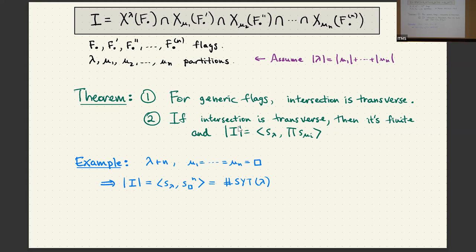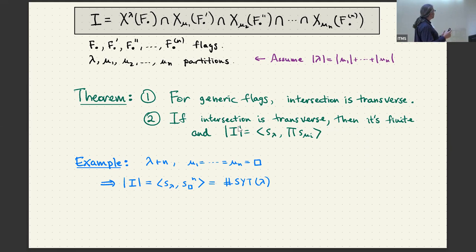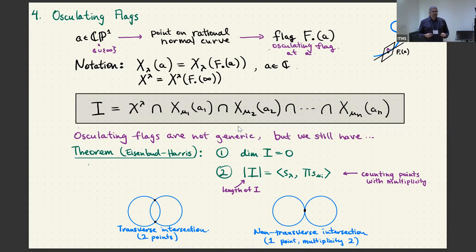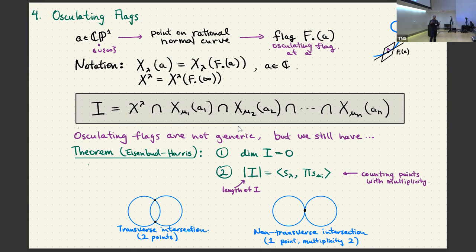The first statement is due to Kleiman. A basic example: if lambda is a partition of n and the mu_1 through mu_n's are all just a single-box partition, then the number of points in the intersection is the inner product of S_lambda with S_1^n, which just counts the number of standard Young tableaux of shape lambda. But this is not giving me the Murnaghan-Nakayama rule — there are no P's in that story.